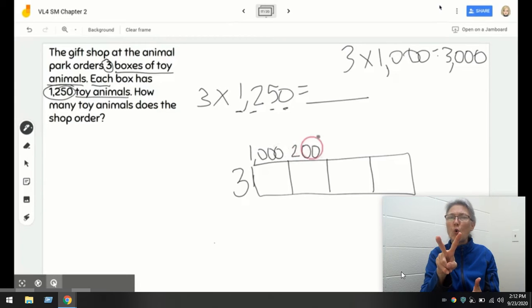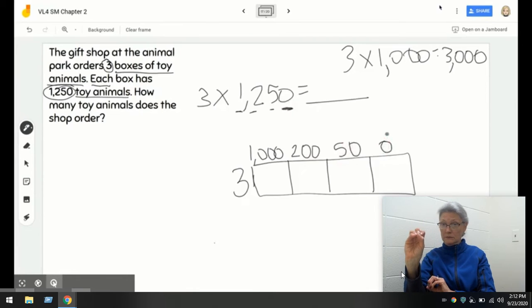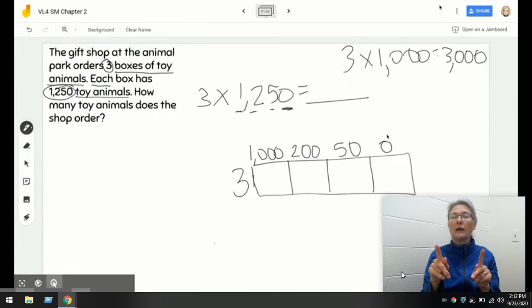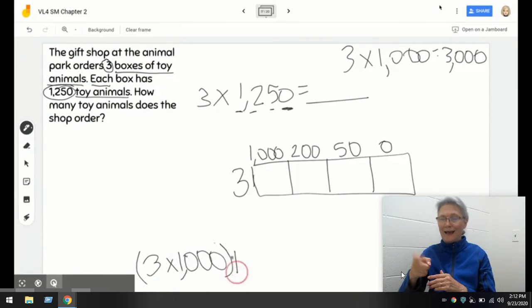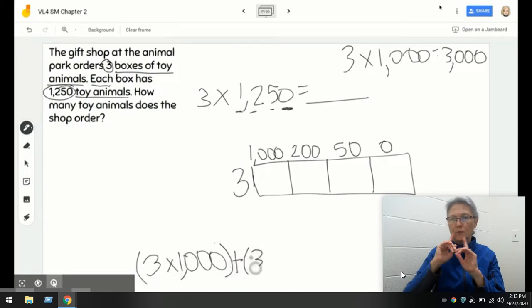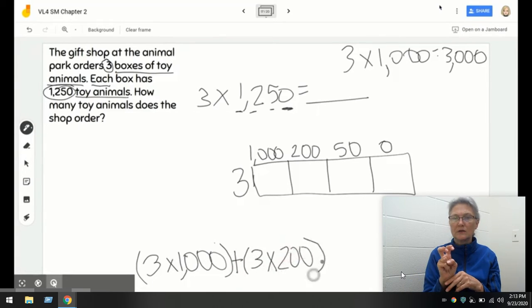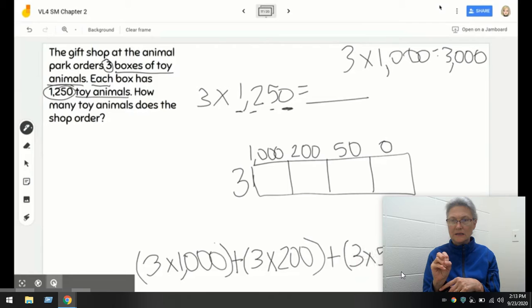1,250. And as you can see, we don't have any ones. So, I could put a zero there just to hold my place. That also means when we represent it like that using the area model, that also tells me that we are multiplying 3 times 1,000, and then we would be adding up all of our partial products. So, we've got 3 times 200 plus 3 times 50 plus 3 times 0 equals.